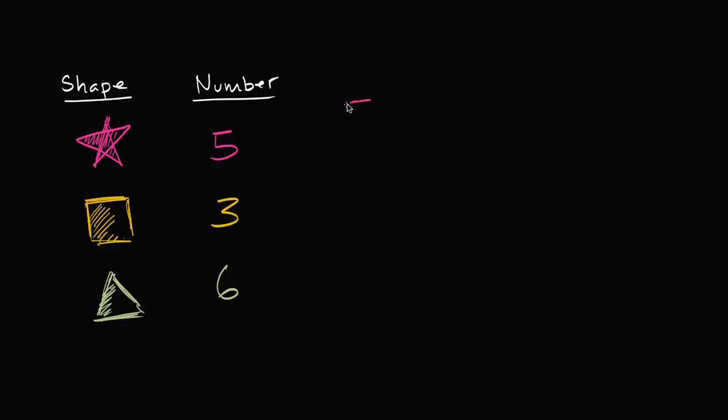So we want to add five plus three plus six. So what is this going to be? Well, what's five plus three? Five triangles plus three squares. Well, five plus three is eight. So this is going to be eight, and then we still have to add six.